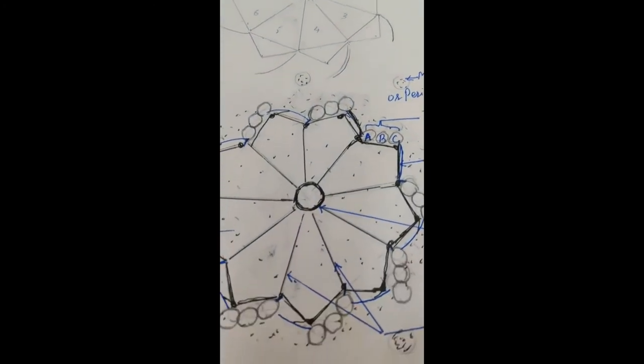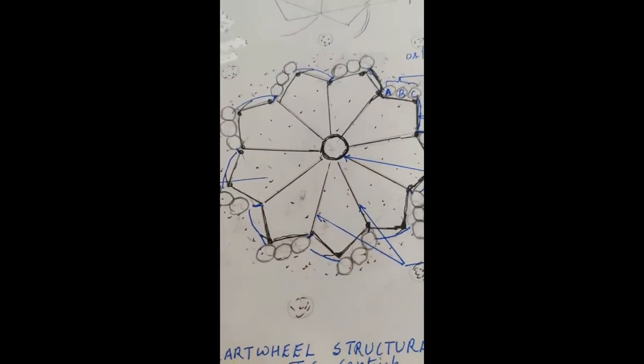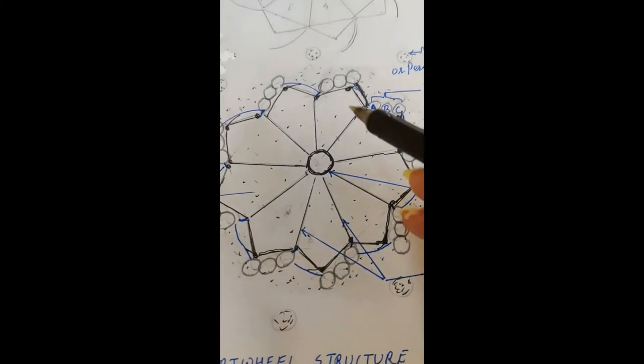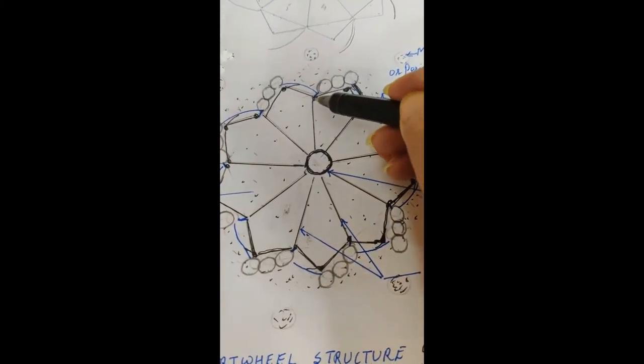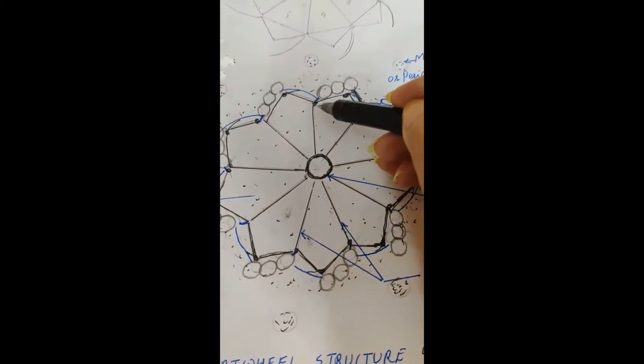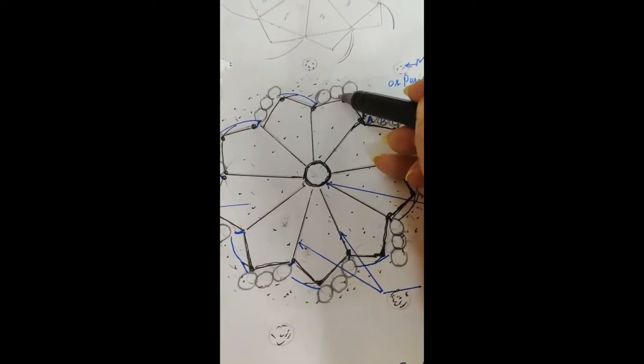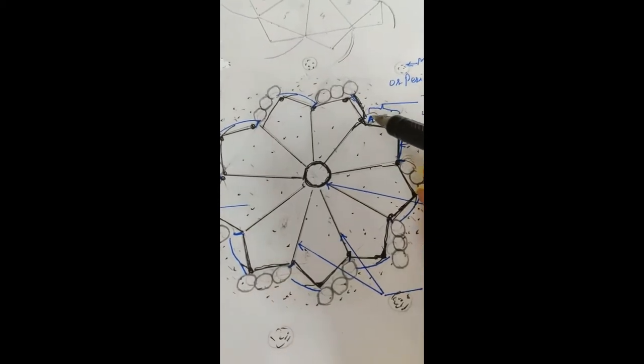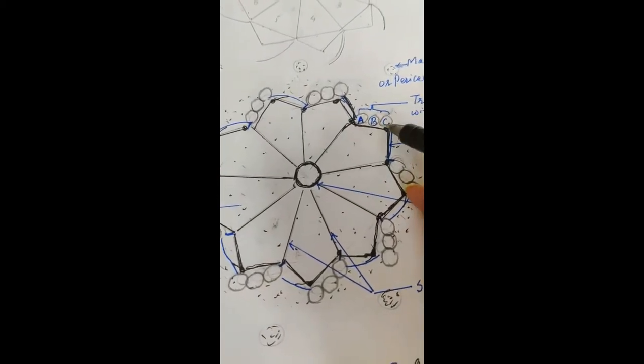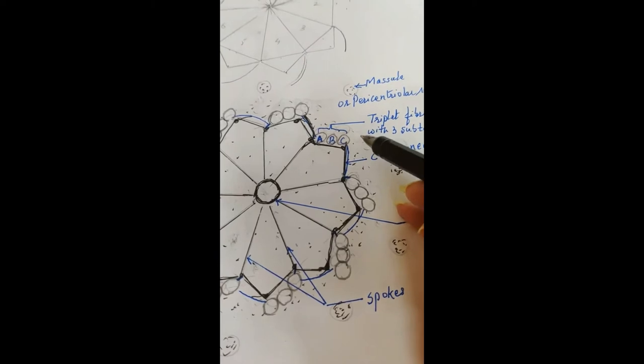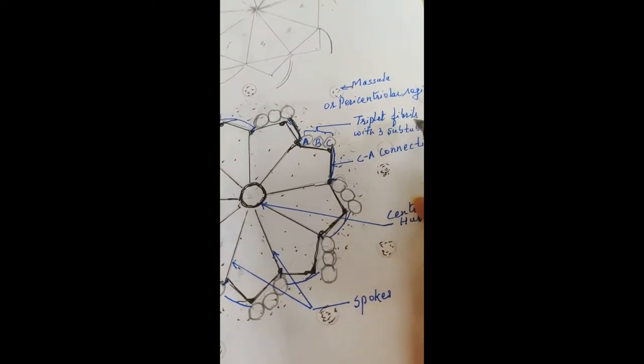Now you just have to complete this structure. What are we doing? We are making along these curved lines, you are making three circles A, B, C depicting the triplet fibrils.